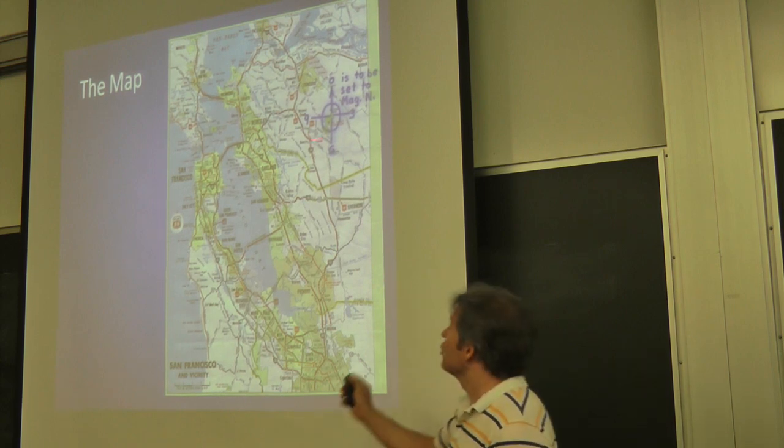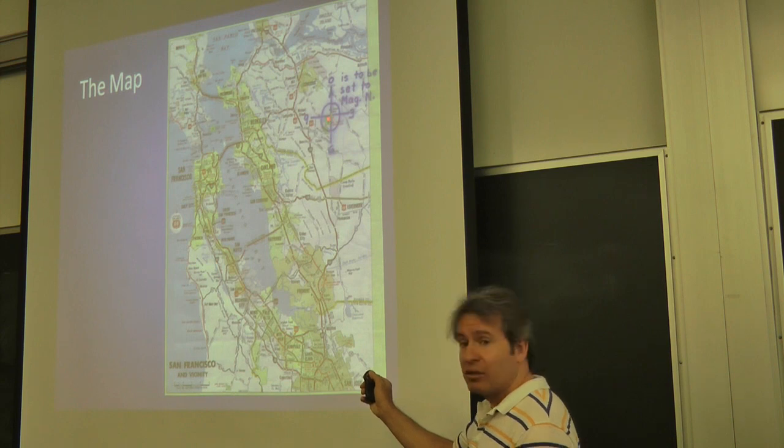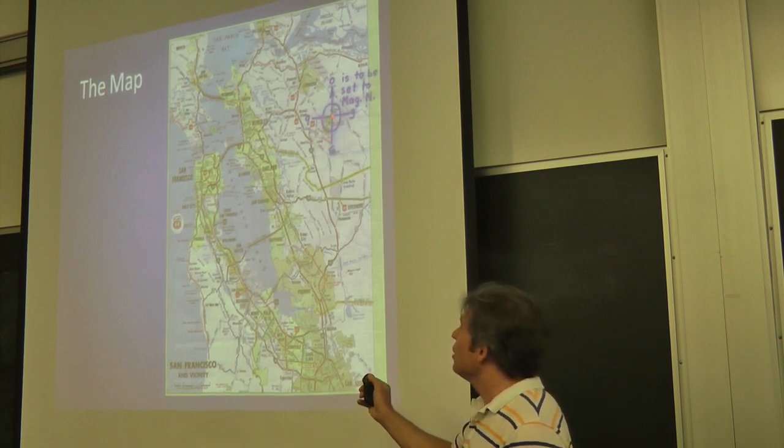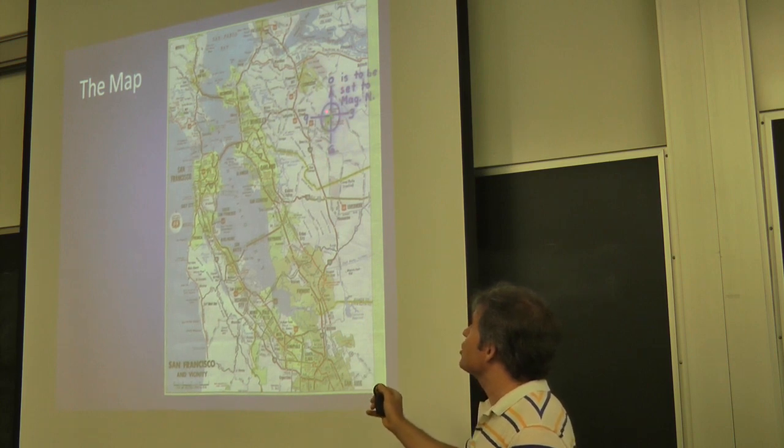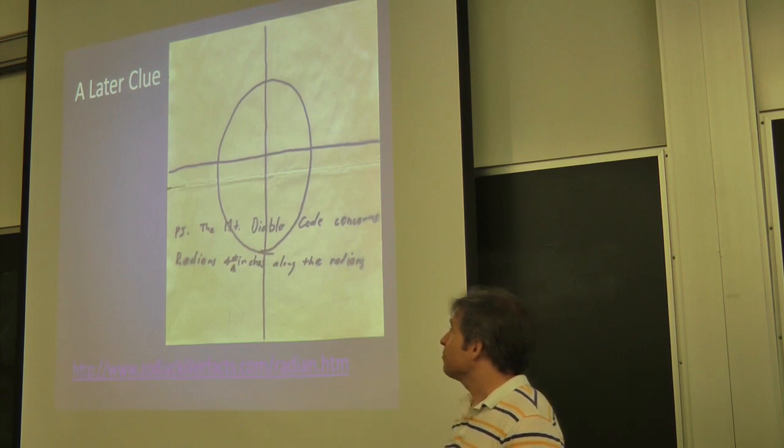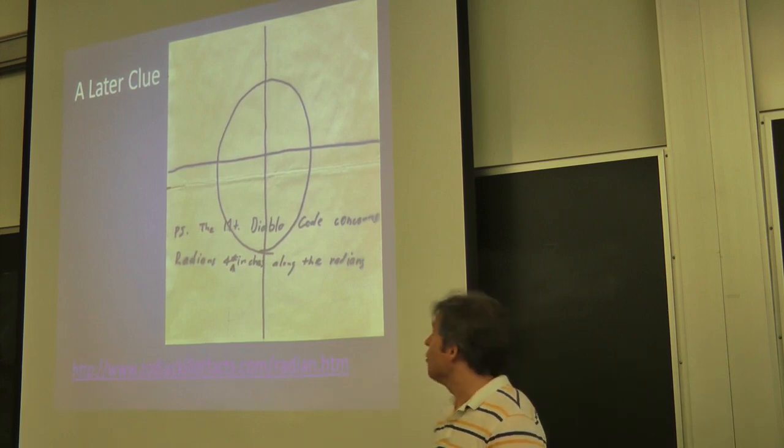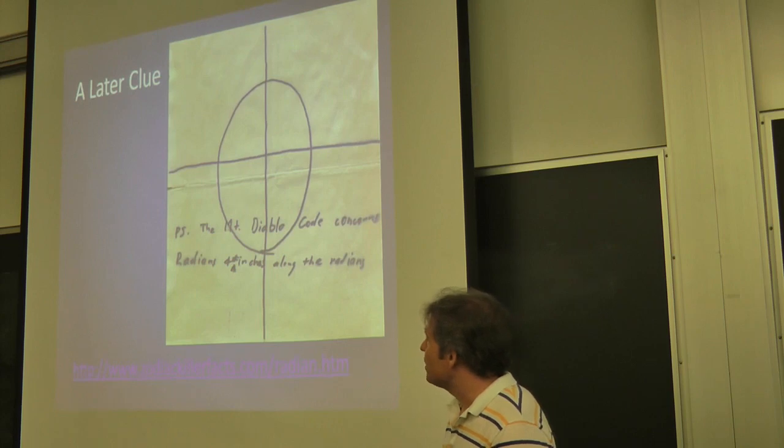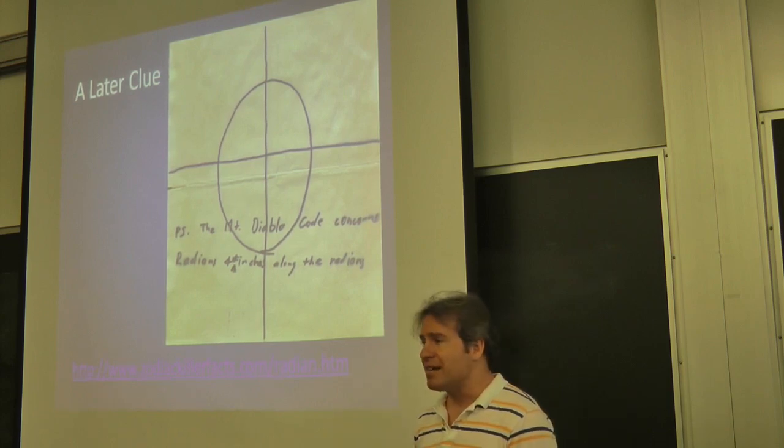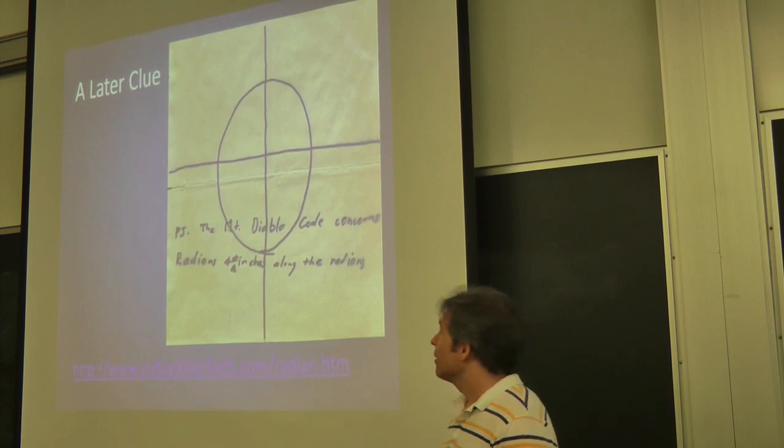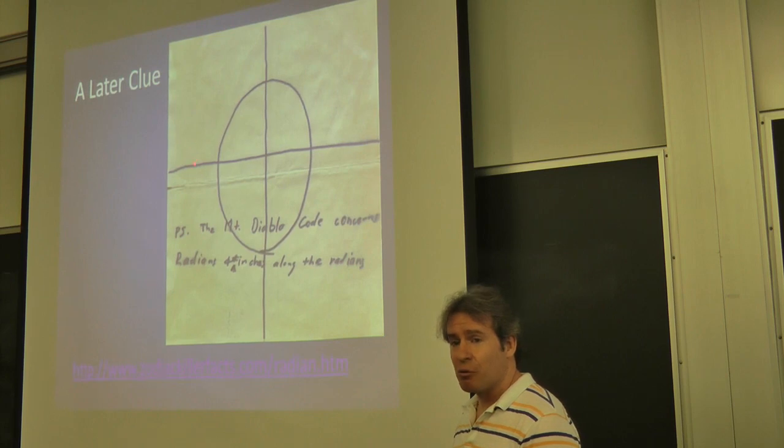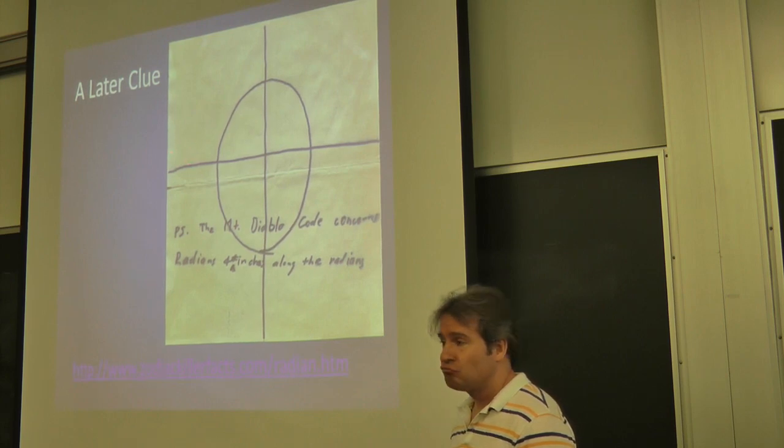Now, one message came with a map. So a map shows Mount Diablo. And there's Zodiac's symbol. Kind of looks like the crosshairs in a rifle, right? But we don't know that's why he chose that symbol. It's speculation. But there's Mount Diablo. And he says, P.S., the Mount Diablo code concerns radians. And it looks like four inches and something along the radians. He's talking about radians. Does this look a little different now? Maybe not crosshairs? Maybe polar coordinates? We don't know.